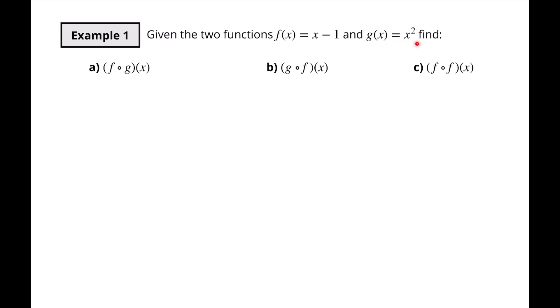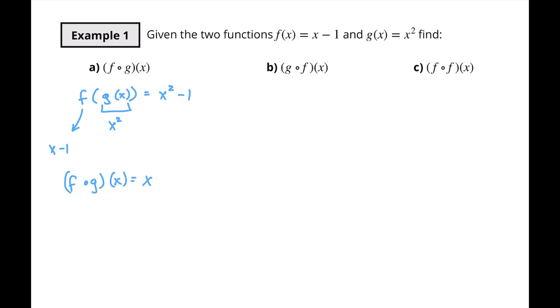Let's look at two examples. We have F(x) = x minus one and G(x) = x squared, and we want to find three composite functions. For F(G(x)), G goes inside F. G(x) is x squared, and F is x minus one, so we replace every x with x squared: F(G(x)) = x squared minus one.